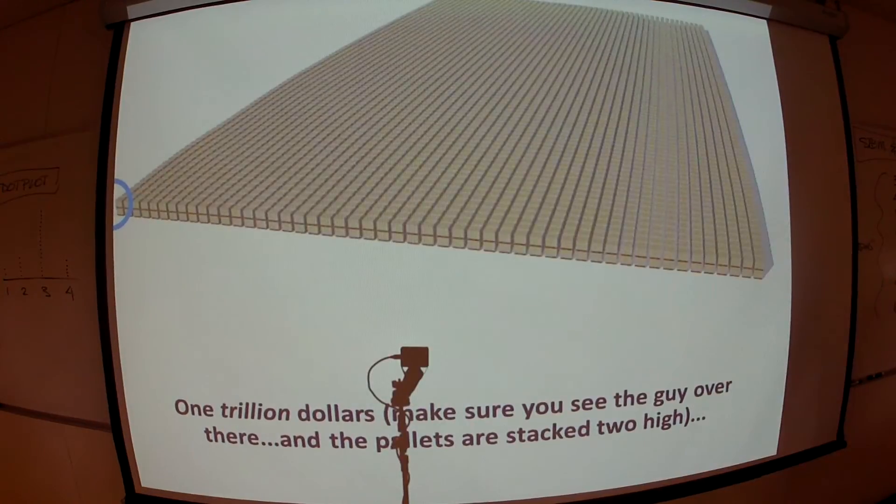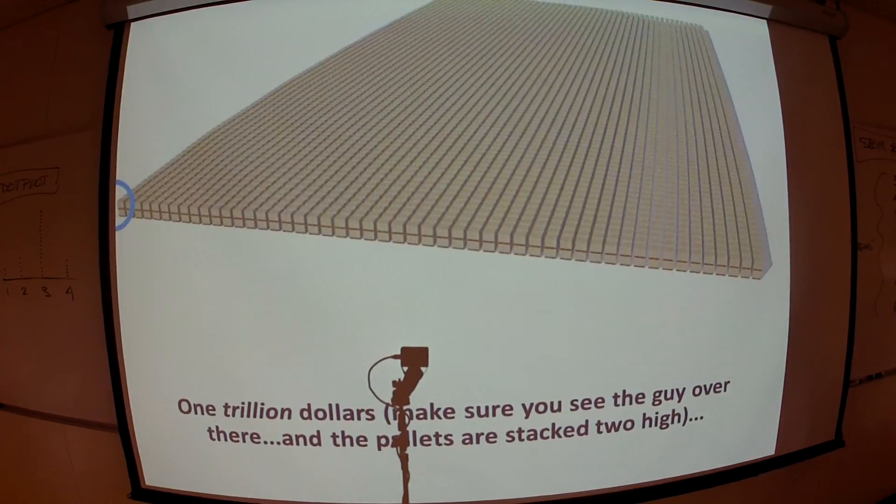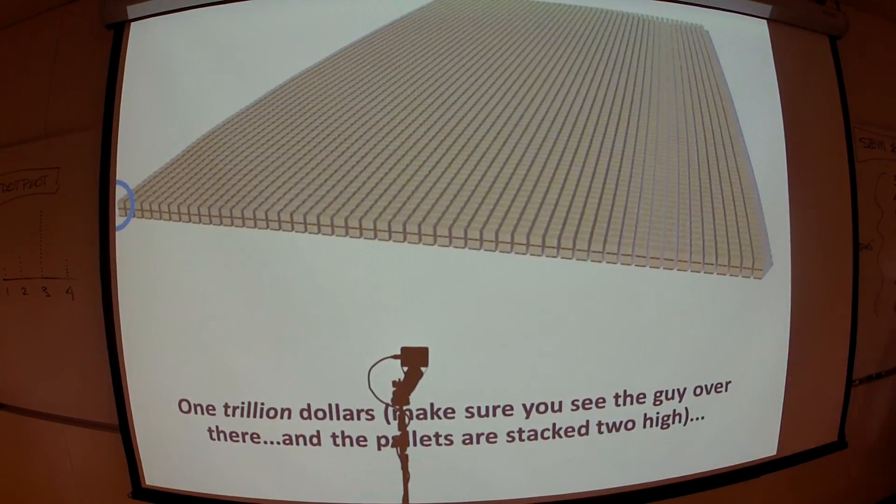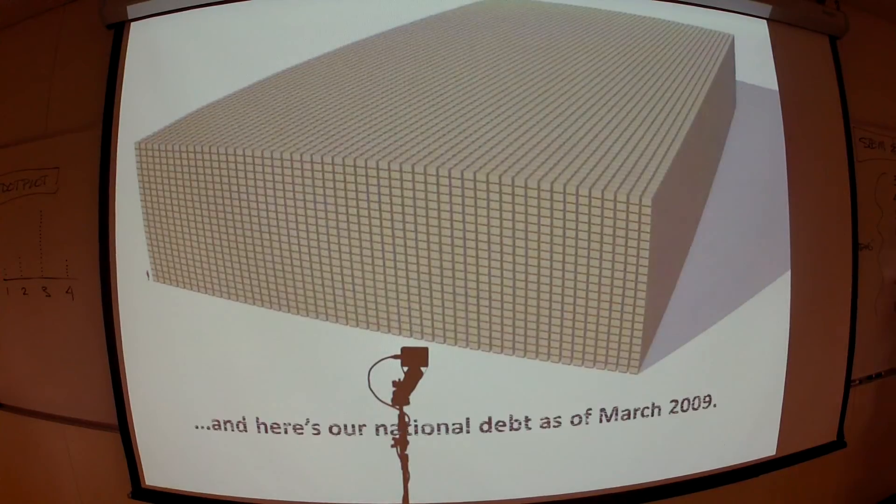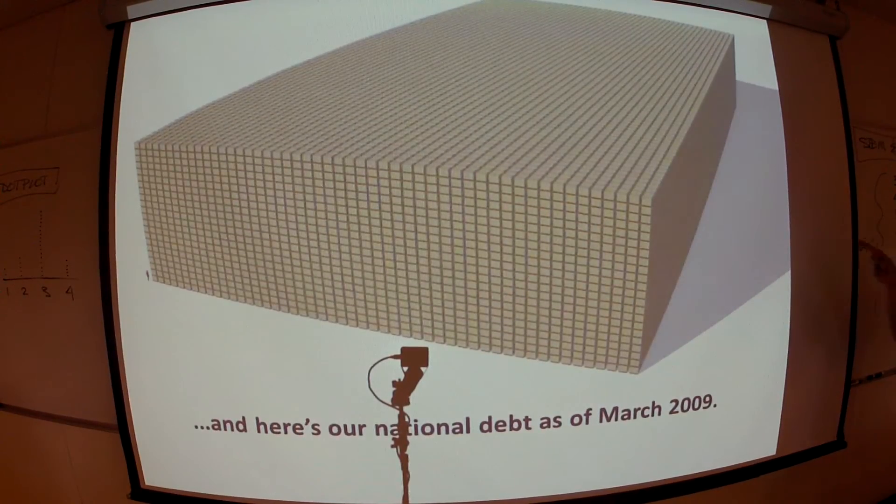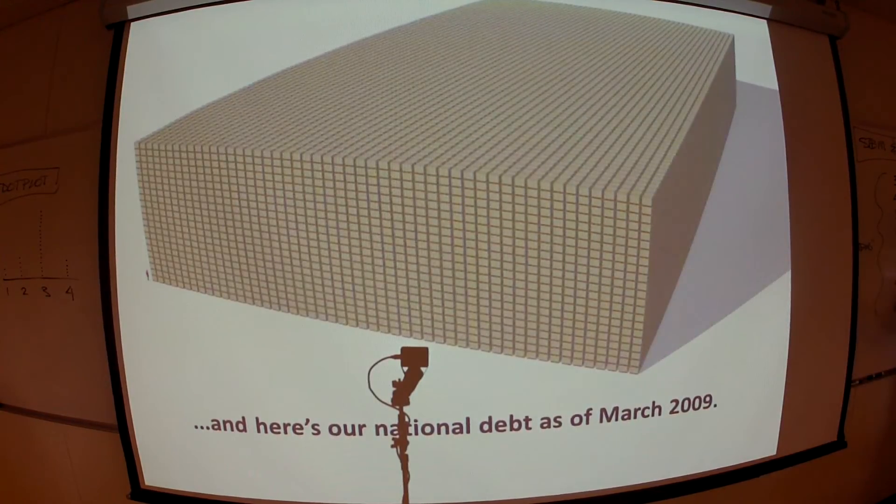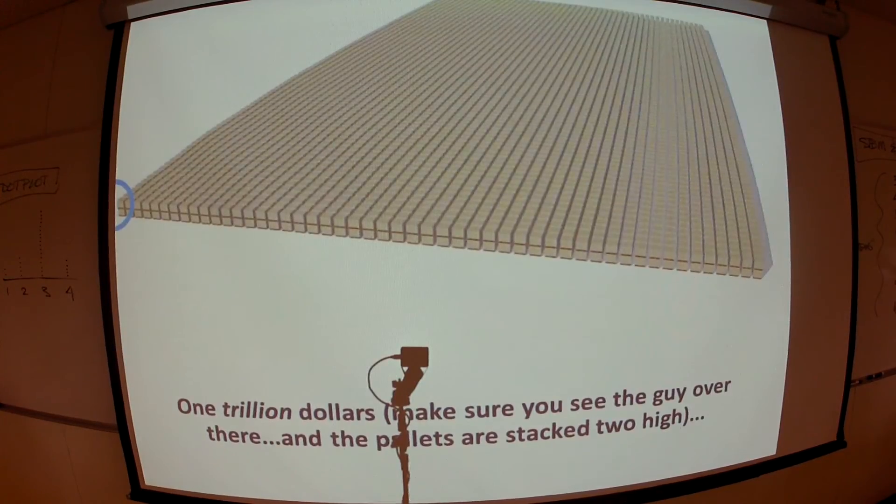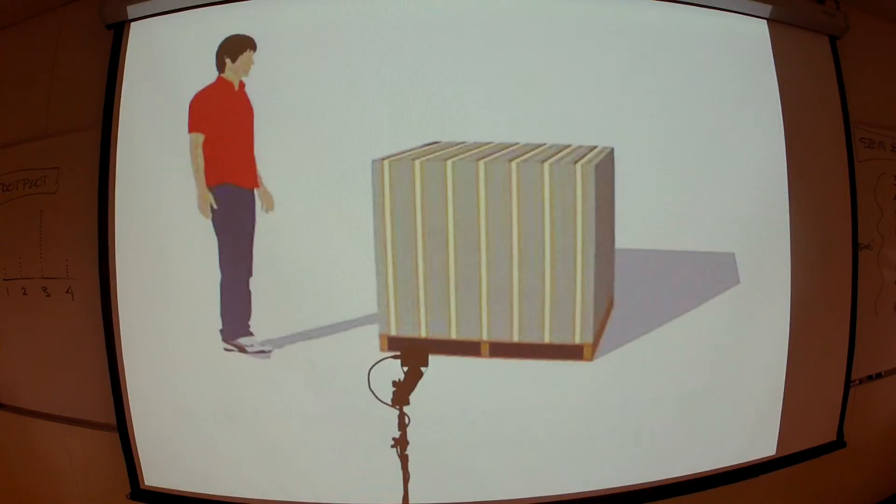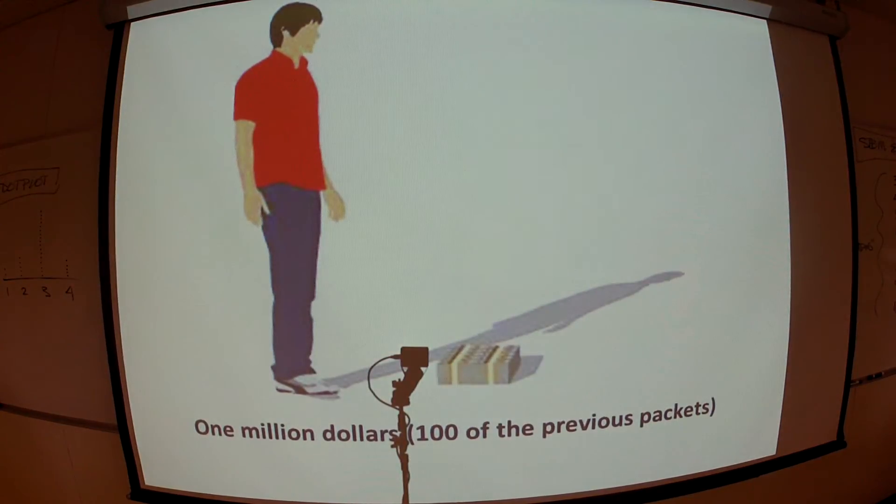When you hear politicians throwing around millions, billions, and trillions, you keep these three images in mind. And when you hear mention the national debt, that's 2011. It's worse. 2009. 2009. It's worse. You keep these visuals in mind, friends. Trillion, billion, million. That's your tax money. Get out there and vote.